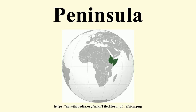A peninsula is a piece of land that is bordered by water on three sides but connected to mainland. The surrounding water is usually understood to belong to a single contiguous body, but is not always explicitly defined as such. A peninsula can also be a headland, cape, island promontory, bill, point, or spit.